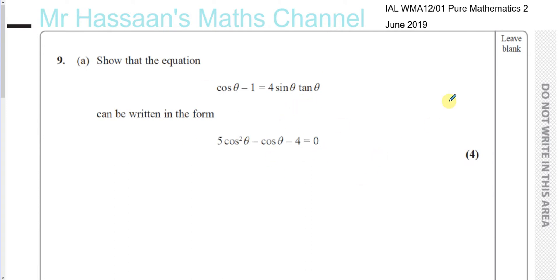Now for these type of questions, there are two fundamental identities that you must know. The first one is tan theta is the same thing as sine theta divided by cosine theta. And the second one, which is really important, is sine squared theta plus cosine squared theta equals 1.